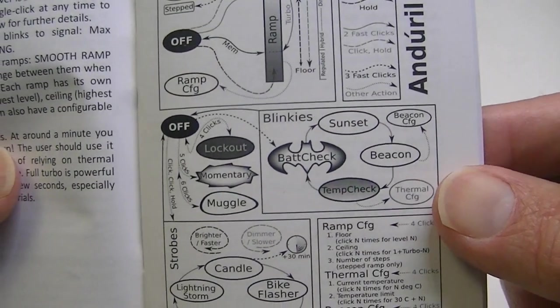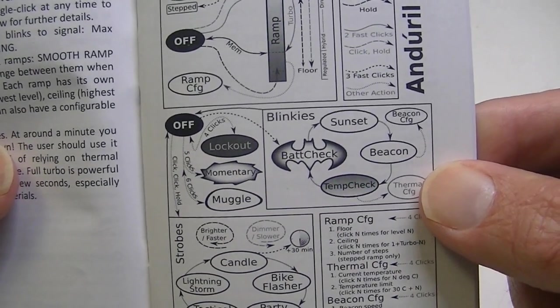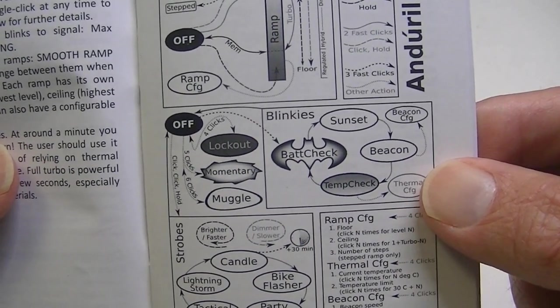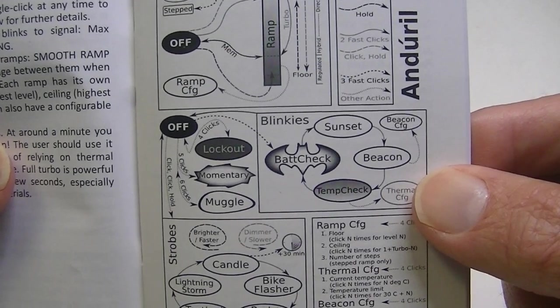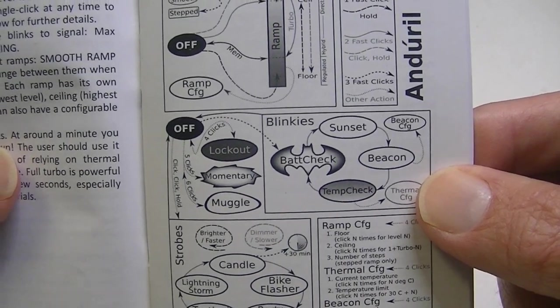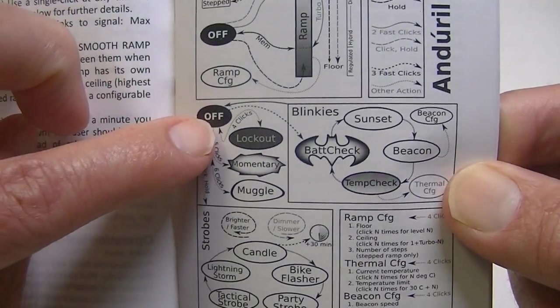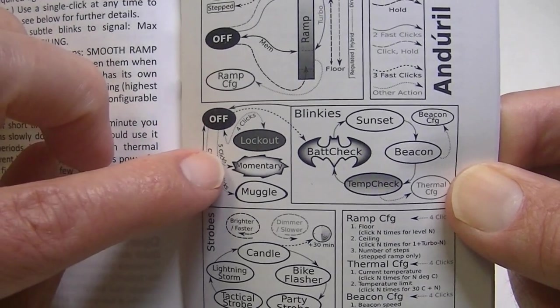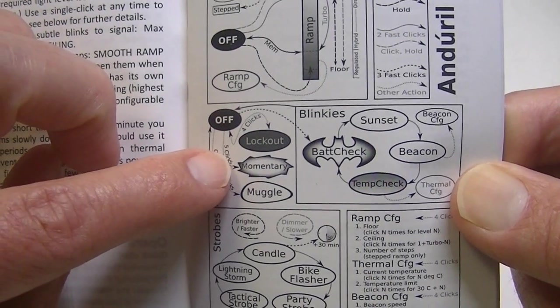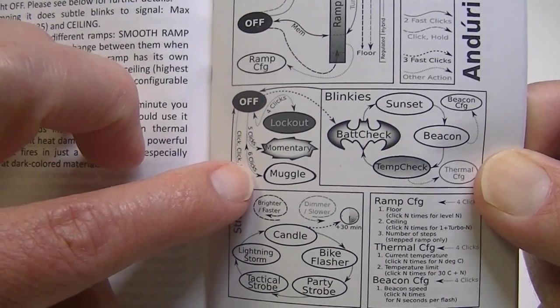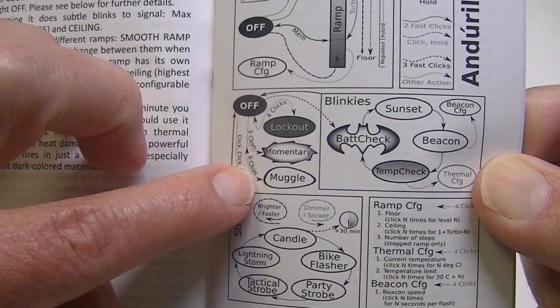It has of course all the strobe modes and the blinky modes that the other lights with this firmware do. Of course you can do the automatic, you can do the electronic lockout, you can make it so it works tactically momentary. And it also has the muggle mode for lending it to someone who isn't so familiar with flashlights, so that all the bells and whistles won't confuse them - it just does a very simple operation in that mode.